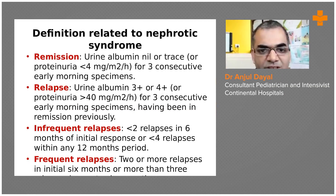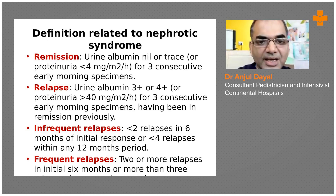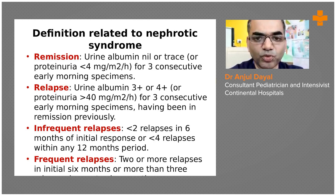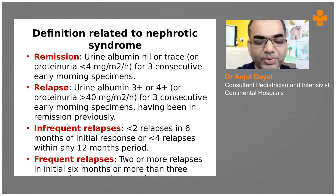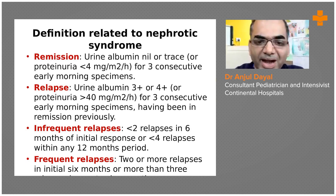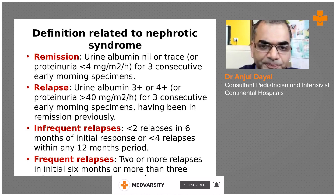Coming to a few definitions we should know: remission means the child's proteinuria has improved, showing three plus on dipstick for three consecutive days. Previously, remember, once in a while the child might develop a little bit of proteinuria on the dipstick, but unless it is three consecutive days, we do not call it a relapse.